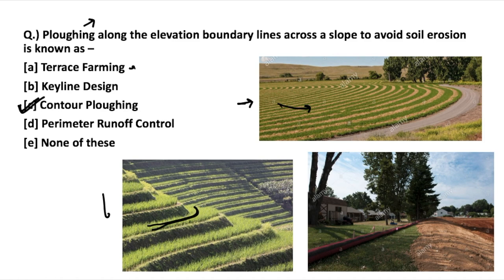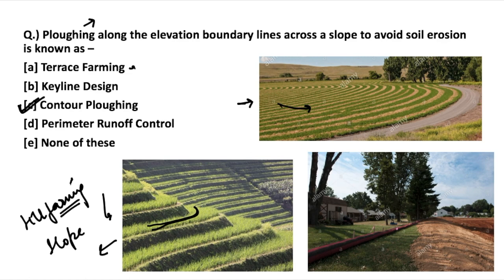Another method is terrace farming. Multiple flat leveled terraces have been carved on hilly areas, and it is usually practiced in developing or less developed nations that do not have mechanized equipment for farming on hilly areas. This is also known as hill farming. It is done on hilly areas to restrict water flow, and when mixed with contour plowing it is also used for rice cultivation, as water gets collected in these flat leveled areas.